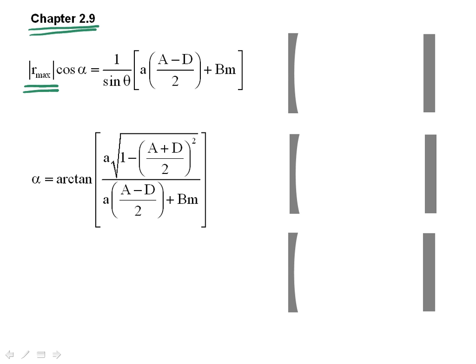Let's run through an example. I'm going to define a round trip inside my cavity, starting at mirror one — let's call this mirror one and this mirror two. My ray matrix is going to begin with free space propagation, so my first matrix is going to be [1, D; 0, 1]. It then hits this flat mirror, which has a radius of curvature of infinity, so its matrix is just the identity matrix.